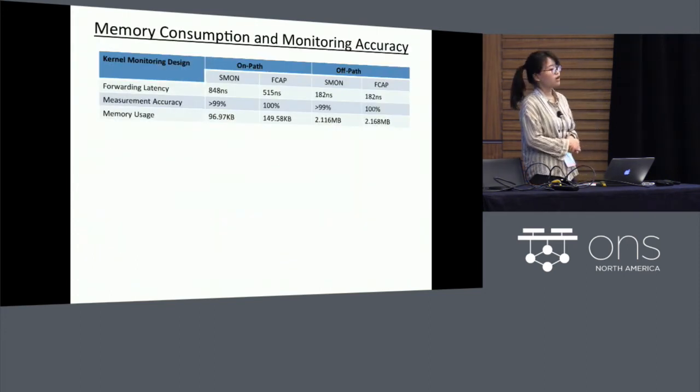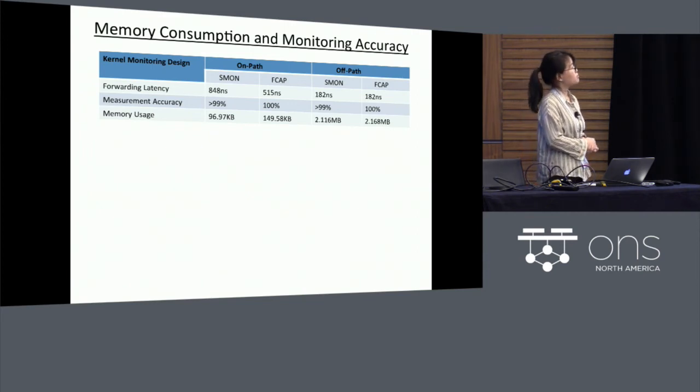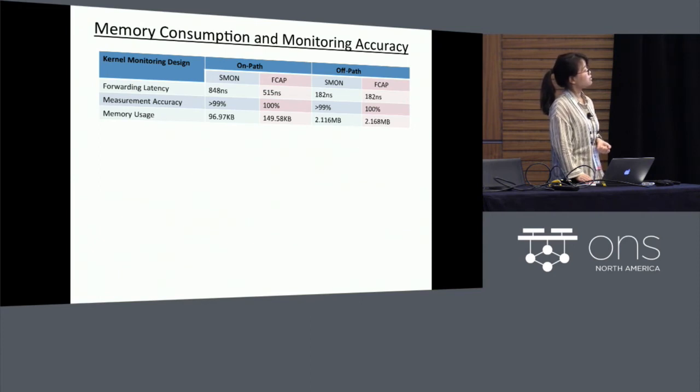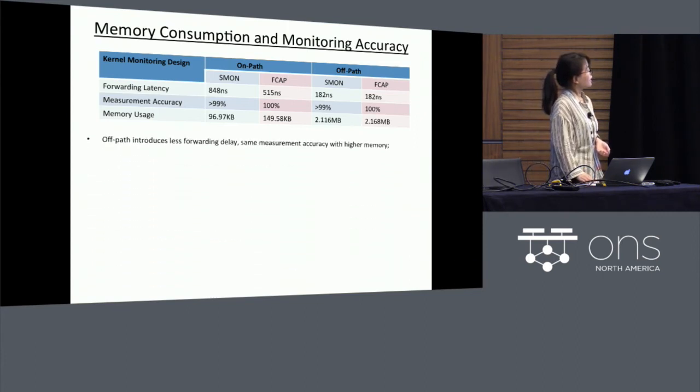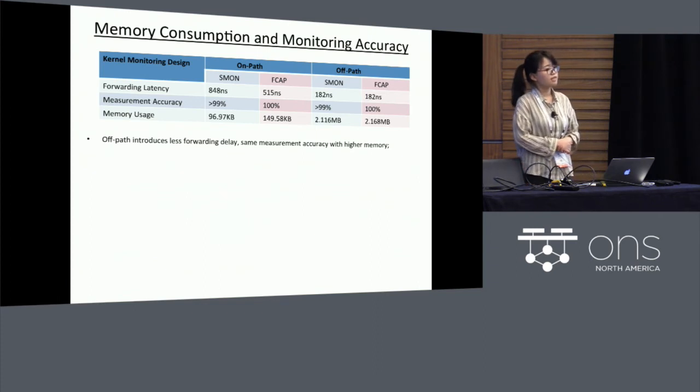We further conduct experiments to measure the memory consumption as well as the monitoring accuracy. And here, as is shown in this table, we find that the off-path designs introduce significantly less processing delay, which is around one-third of the processing delay compared to the on-path designs. However, in order to achieve the same measurement accuracy, it requires higher memory usage due to the use of the ring buffer, since the ring buffer has to be sufficiently large in order to accommodate all the incoming packet headers.